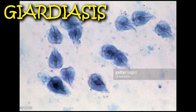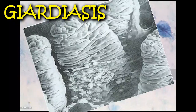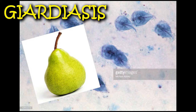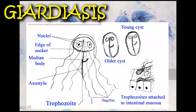The trophozoite is actively motile, the invading stage of the parasite, and lives on the villi of the small intestine. Trophozoites can be distinguished from all other human intestinal protozoans by their characteristic pear-drop or kite-like shape, the presence of eight flagella attached to a central axostyle, a ventral adhesive disc, and the presence of two distinct nuclei.